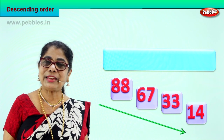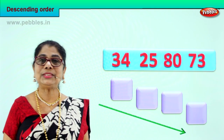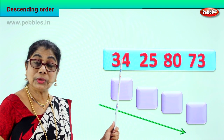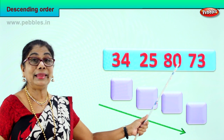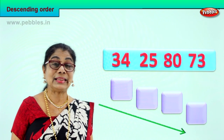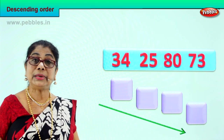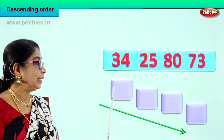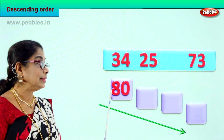Did you enjoy arranging the numbers in descending order? Shall we take one more set? Let's look at the numbers and check the tens. Thirty-four: three tens. Twenty-five: two tens. Eighty: eight tens. Seventy-three: seven tens. So we have three tens, two tens, eight tens, seven tens. Which is the biggest? Certainly eight tens, zero ones. Eighty is the biggest number and we put it right on top because we are doing descending order — the biggest number has to be on top.